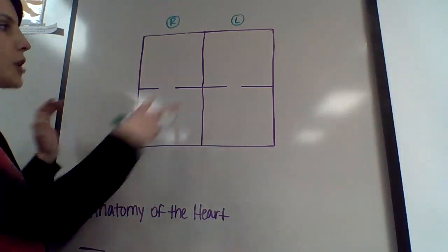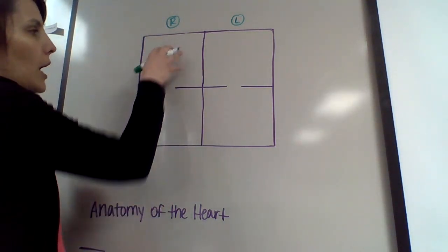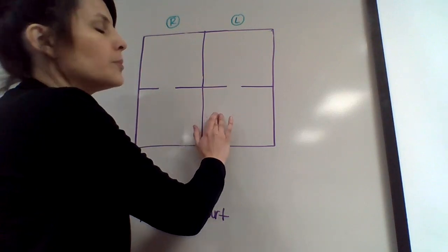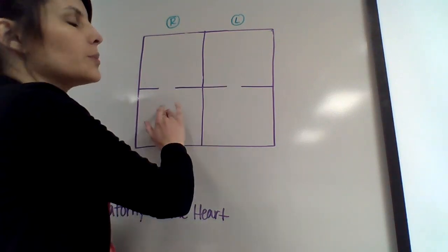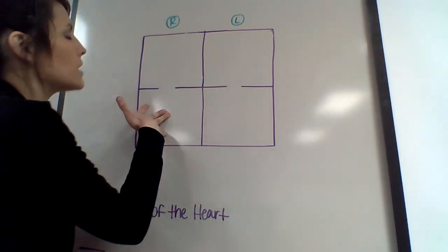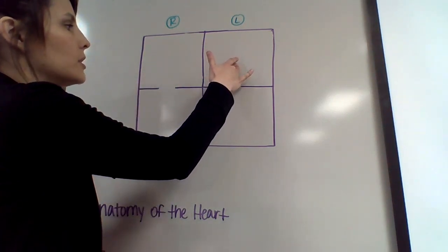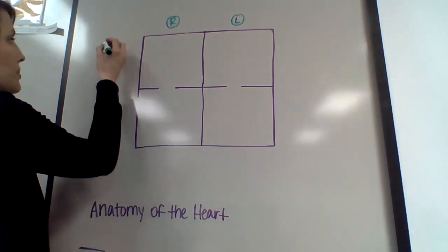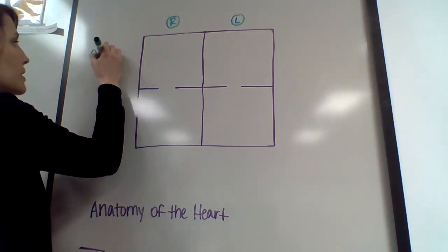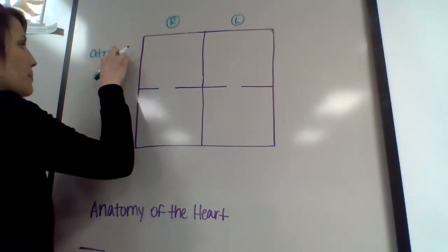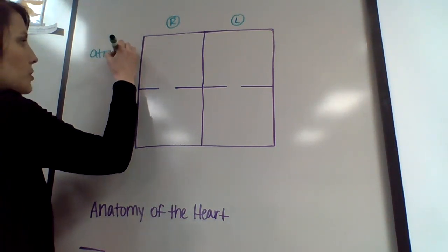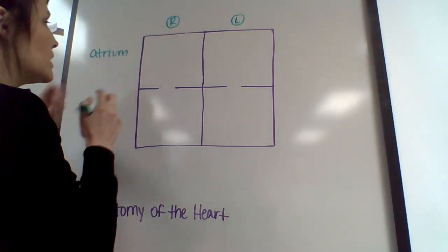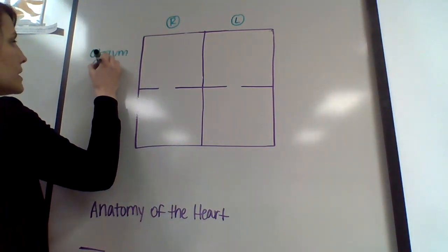I like to think about the heart as like a house, so if this is the house and we've got rooms within the house, then each of these rooms are going to be called chambers. So we need to label our chambers, so we already have right and left, so now we need names for the tops and the bottoms. The tops of the heart is always referred to as the atria or atrium, kind of depends on if it's plural or singular. If you're just talking about one, like the right atrium, then it's UAM, but if you're talking about them together, then it's the atria.